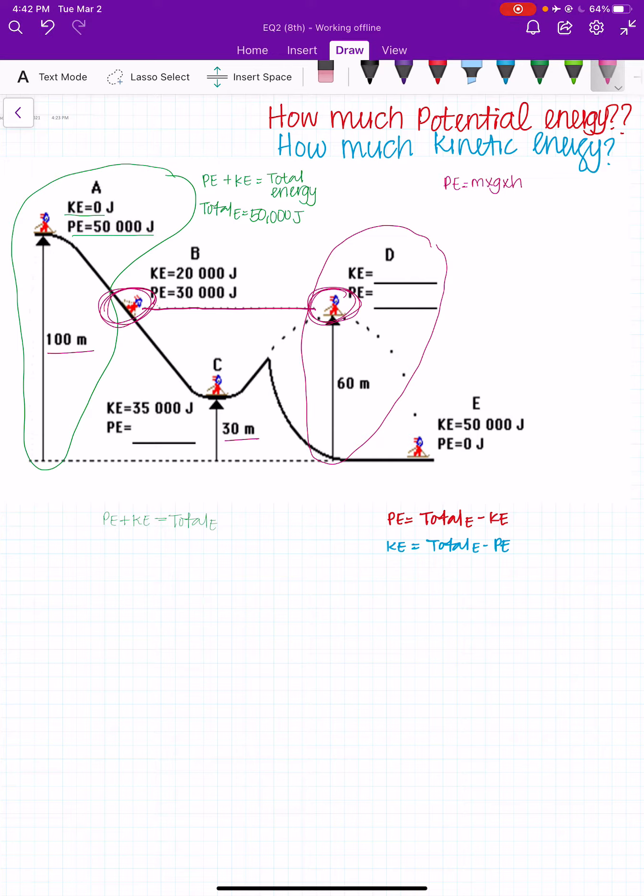So right here, I've got my potential energy. Now, the only difference, well, nope, I've got my potential energy. And if I'm at the same height, my potential energy is going to be the same. So that means that my potential energy, since we're at the same height, it's going to be 30,000 joules.